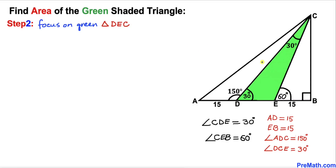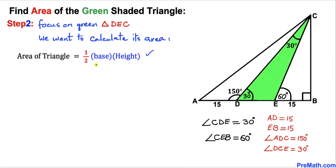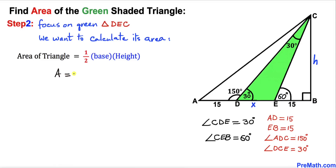Now let's focus on green triangle DEC and calculate its area. The area of a triangle equals one-half times base times height. Let's assume the height of this green triangle is H and the base is X. Then the area equals one-half times X times H — let's call this equation number 1. In the next steps we will find the values of X and H.